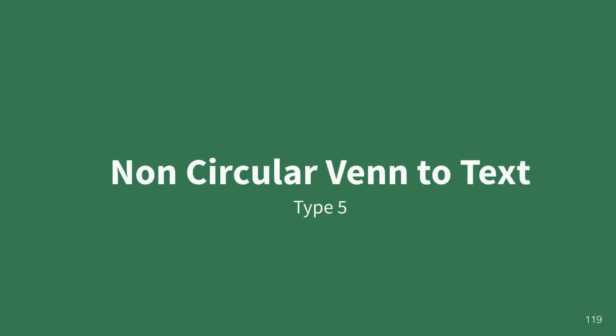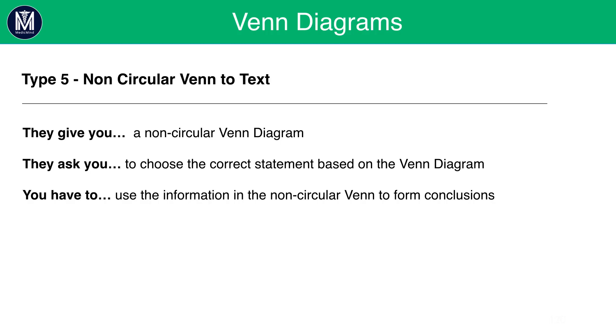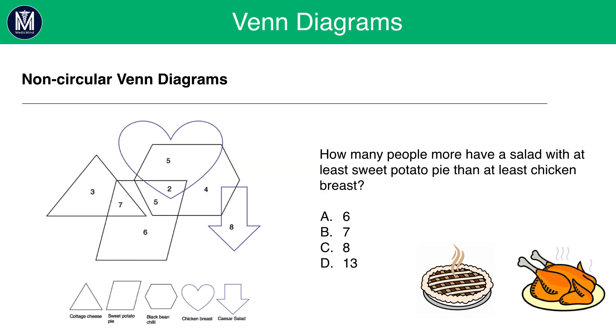Next, we have non-circular Venn to text diagrams. Now, here you'll be given a non-circular Venn diagram. You may think this may be a lot harder than a standard diagram, but trust me, it's not that much more difficult. The same principles apply. You'll be asked to choose a correct statement based on the Venn diagram. You'll have to use the information in the non-circular Venn to form conclusions.